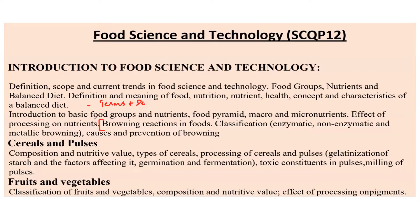Browning reactions in foods — there are multiple types of browning: enzymatic and non-enzymatic, for example Maillard reactions, caramelization, and others. You can expect questions about what causes these browning reactions, how you can prevent them, and at what temperature these types of browning happen.